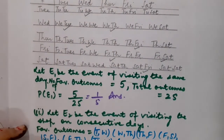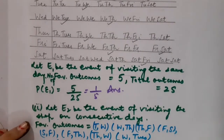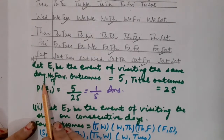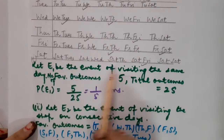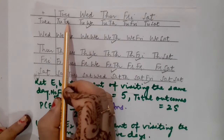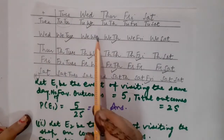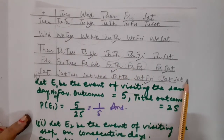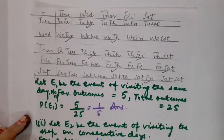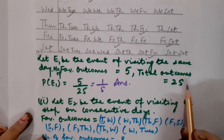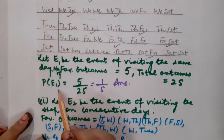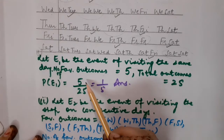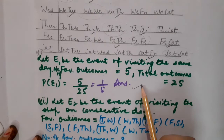Part 1: Let E1 be the event of both visiting the shop on the same day. The favorable outcomes are (Tuesday, Tuesday), (Wednesday, Wednesday), (Thursday, Thursday), (Friday, Friday), and (Saturday, Saturday) — 5 outcomes. So the probability P(E1) = 5/25 = 1/5.